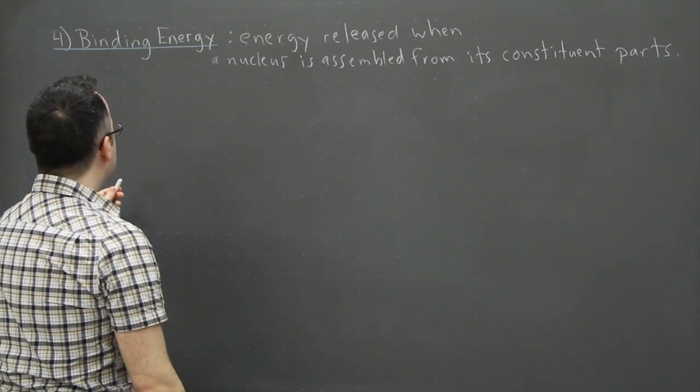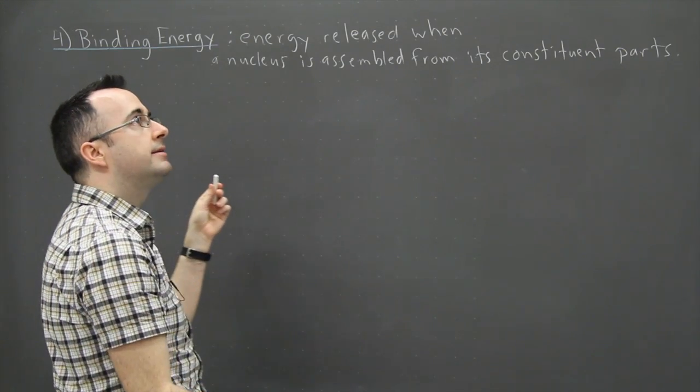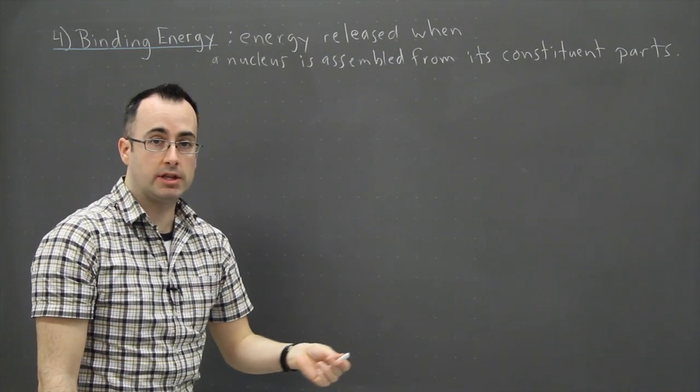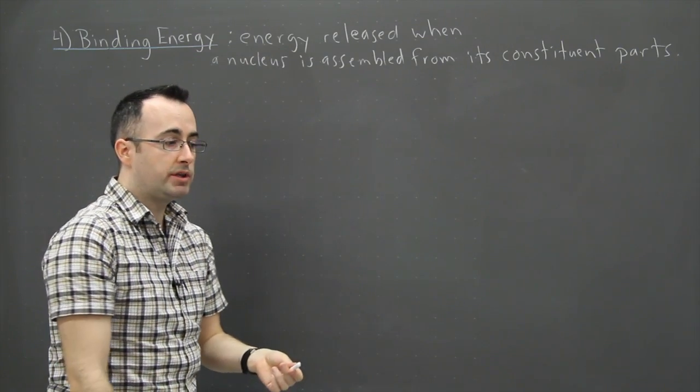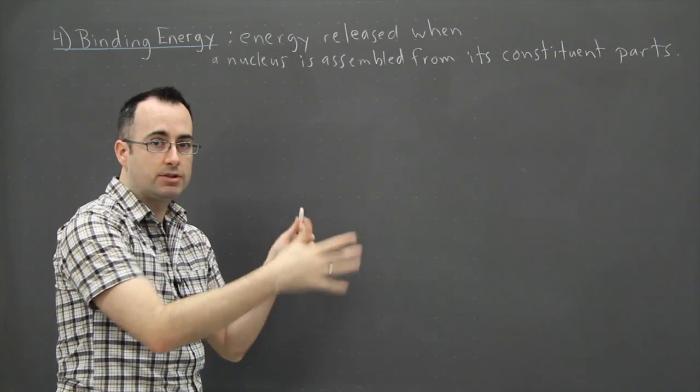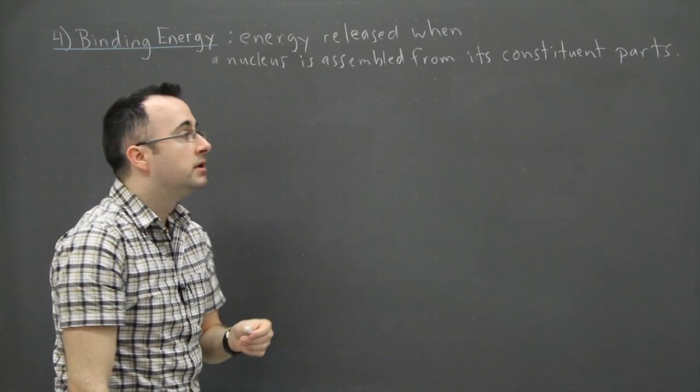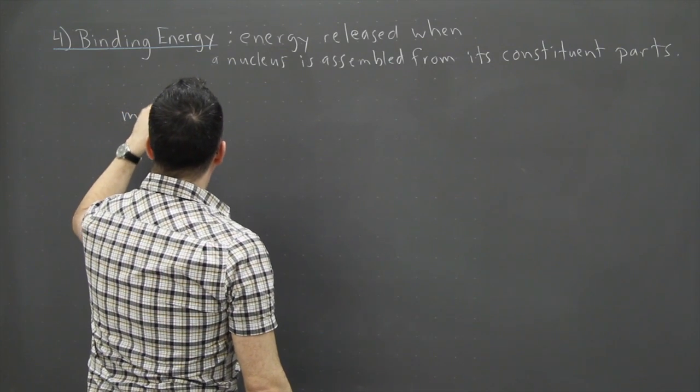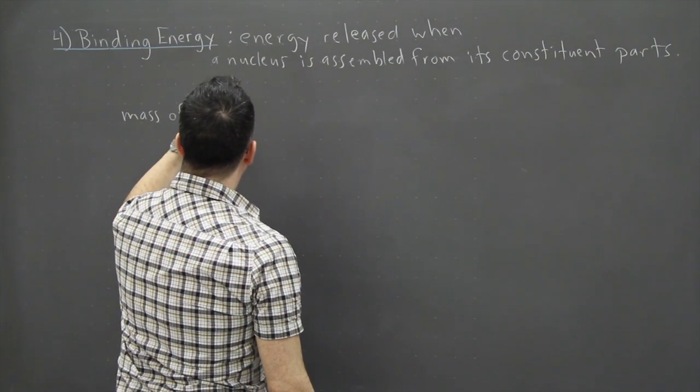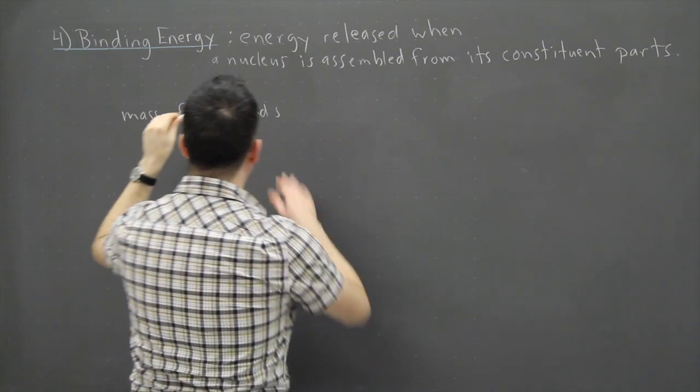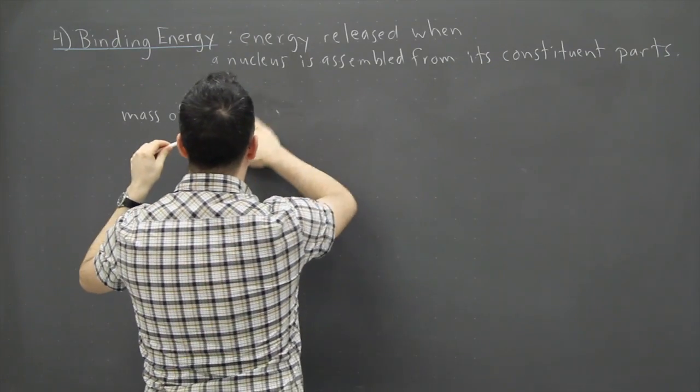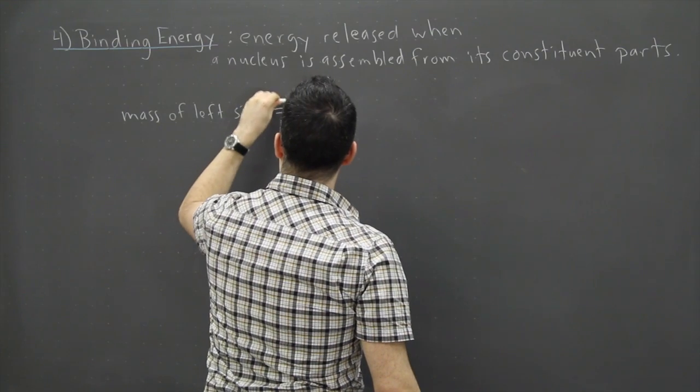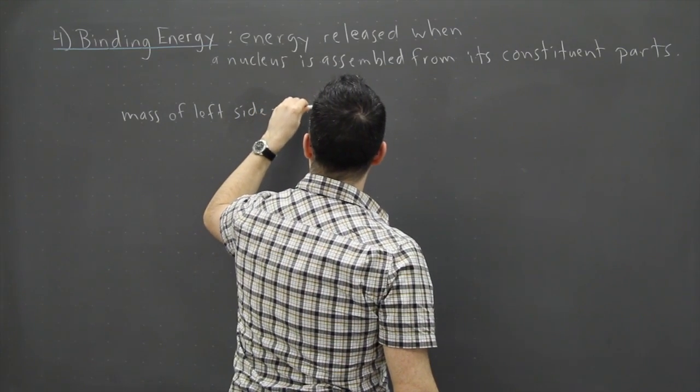Now the binding energy itself, this is actually pretty interesting. When you're looking at a decay equation like we were just doing before, you have a left hand side and the right hand side of this sort of decay equation. The mass of the left side is not equal to the mass of the right hand side.